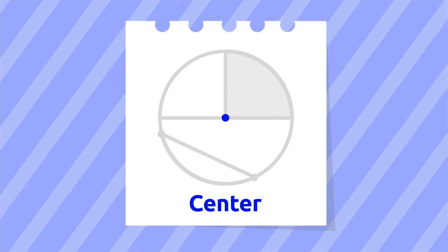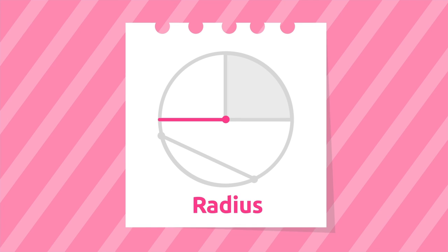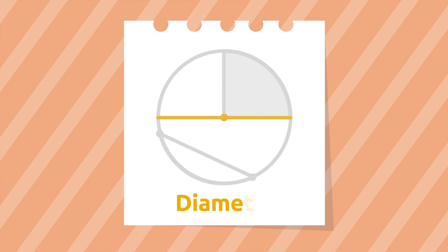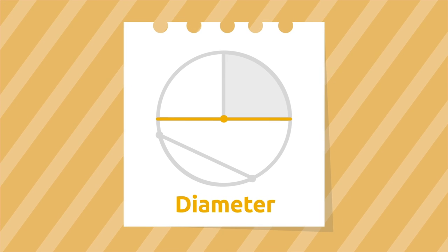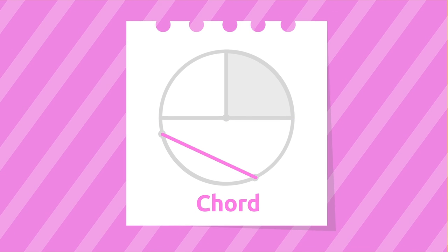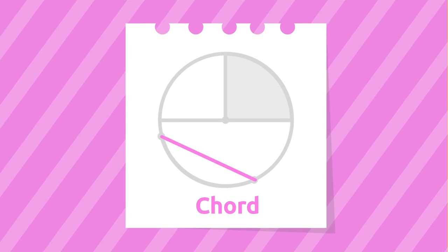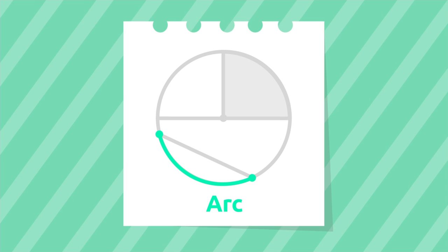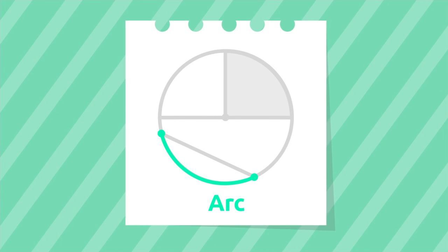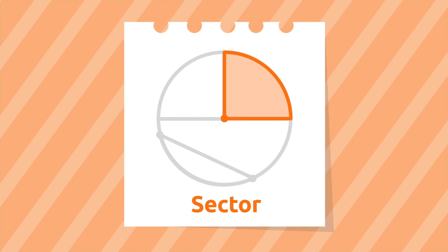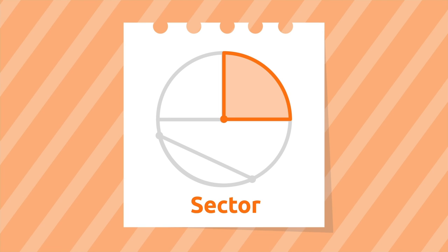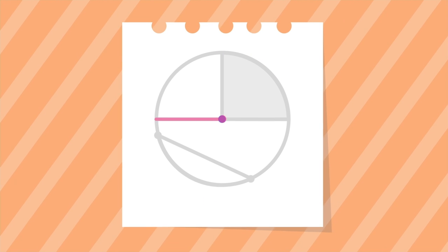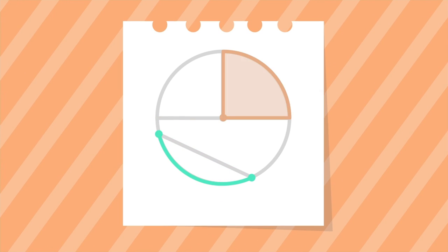Let's recap the parts of the circle and the circumference: the center, the radius, the diameter, the cord, the arc, and the sector. Well done — awesome roundup! See you soon, friends.